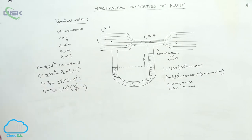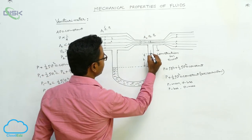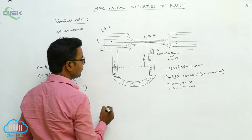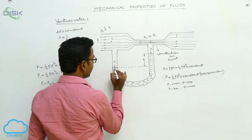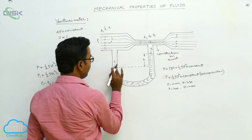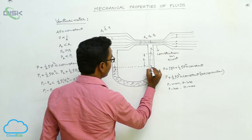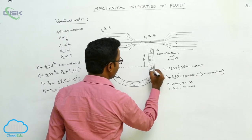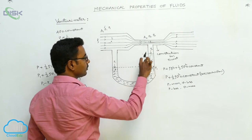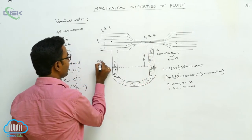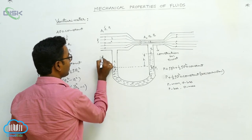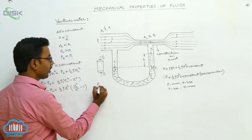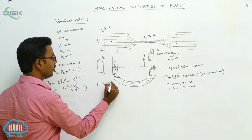Now what is P1 minus P2? Point 1 is where pressure is P1 and point 2 is where pressure is P2. Considering points A and B at the same horizontal level, the pressure at B is also P1. The manometer column of height H gives P1 minus P2 equals rho*g*H.